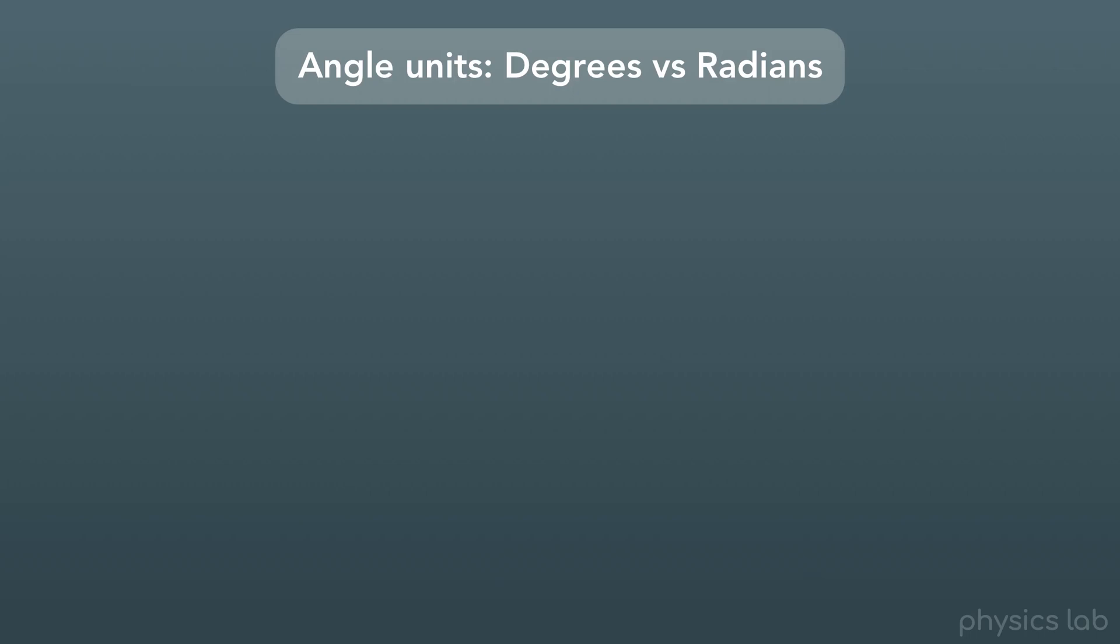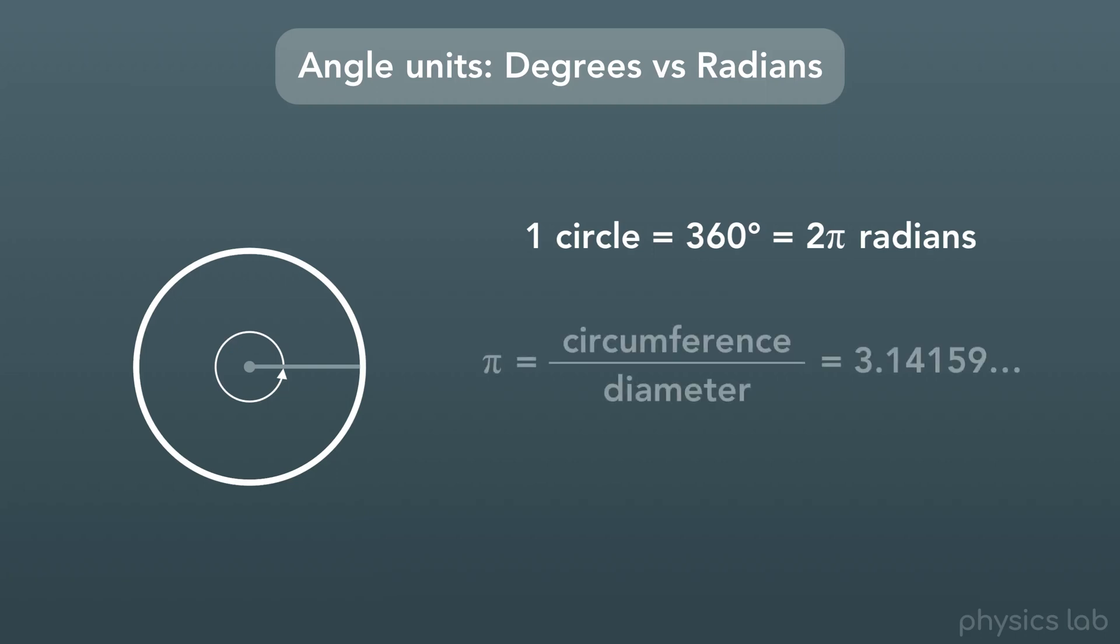So what's the relationship between degrees and radians? One full circle, if you make one full revolution, has 360 degrees. It also has 2 pi radians, where pi, if you remember, is the circumference of a circle divided by its diameter. So here's our conversion: 360 degrees equals 2 pi radians.